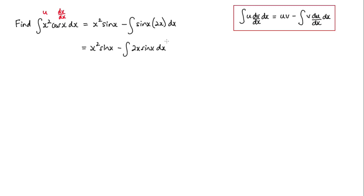Now I'll need to apply integration by parts again on this set of terms here. So u will be the 2x term and sine x, that will be my dv by dx term this time.